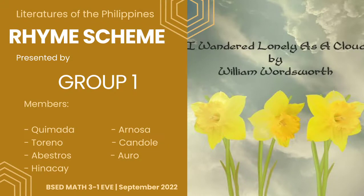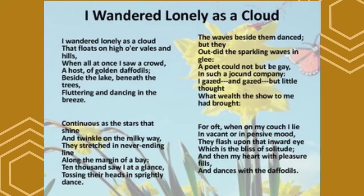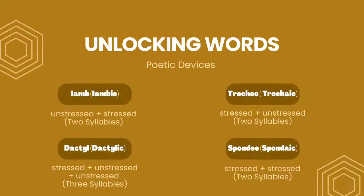Good day, we are from group one and we are tasked to seek for the rhyme scheme in the poem of William Wordsworth entitled 'I Wandered Lonely as a Cloud.' For the recapitalization, this is the poem by William Wordsworth. At this point, you are going to unlock the words that are quite unfamiliar, which are the poetic devices.